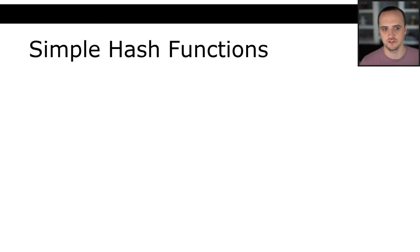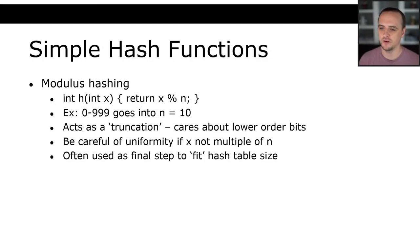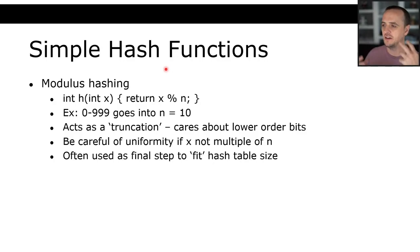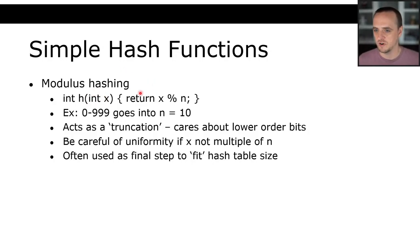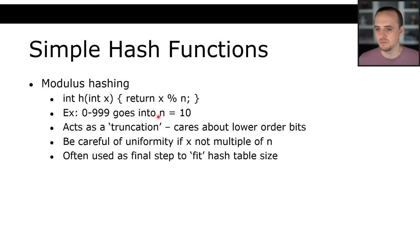Now let's look at some very simple hash functions. Modulus hashing: you will probably use this at some point, if not for assignment two or three. We take a typically large input range of integer values and map it to a smaller range. We take an integer X and return X modulus N, where N is the number of bins or the output range size. For example, taking values from zero to 999 and mapping them into N=10: 237 mod 10 gives 7, so 237 would be stored at index 7 in the hash table.